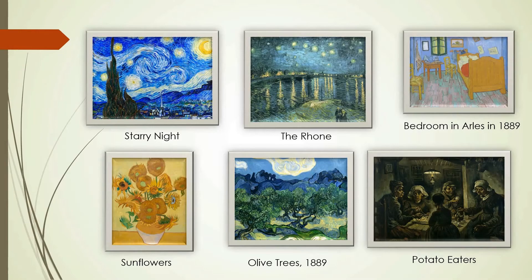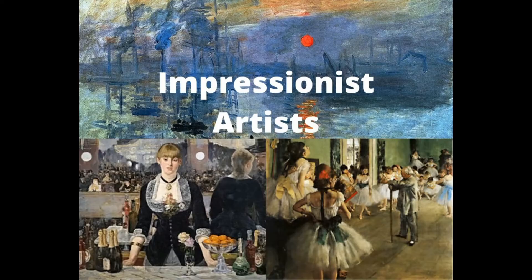Among his many paintings are 'Starry Night,' 'The Run,' 'Bedroom in Arles,' 'Sunflowers,' 'Olive Trees,' and 'The Potato Eaters.' Impressionism was the most important art movement of the 19th century, and it was exhibited throughout the world well into the 20th century.